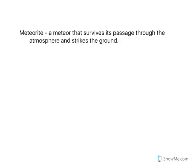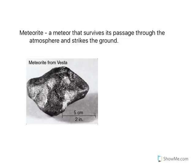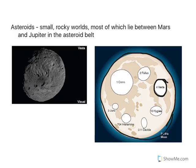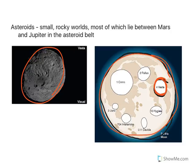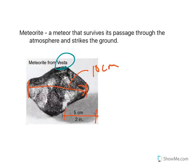Now let's look at meteorites. A meteorite is a meteor that survives its passage through the planet's atmosphere and strikes the ground. Here's an image from your textbook of a meteorite, with a scale of about 5 centimeters — this meteorite is maybe 10 centimeters in diameter, just a couple of inches. More importantly, note that this meteorite came from Vesta, the asteroid in the asteroid belt. Vesta is much larger than a meteorite — this meteorite is a chip that came from Vesta.